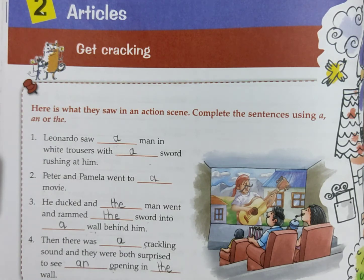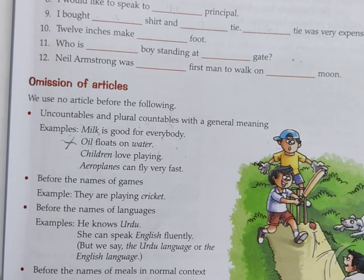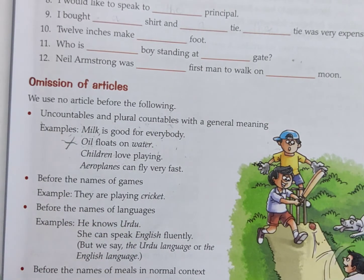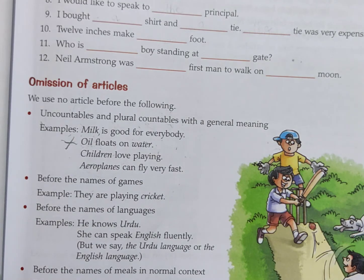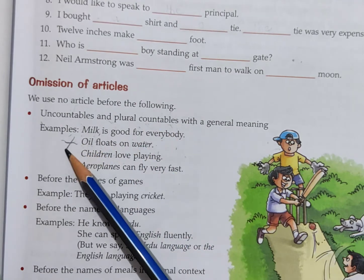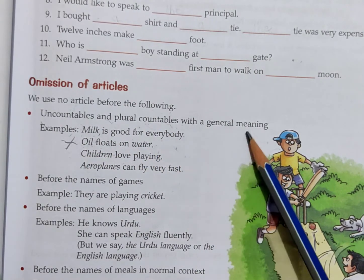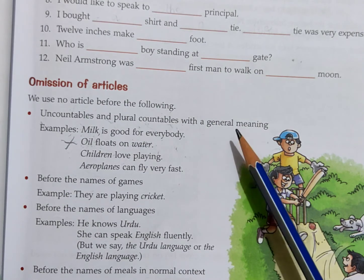Today students we will learn how to omit the article — where we have to omit the article. Open page number 27. Now look at the first rule related to the omission of articles: we use no article before uncountable and plural countable nouns when they are used with a general meaning.